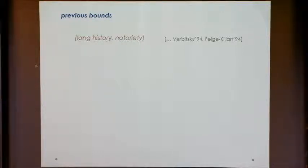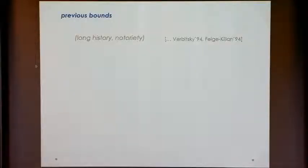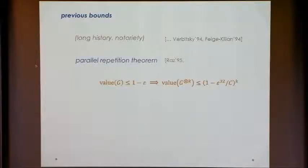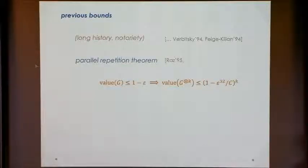Initially it was conjectured that parallel repetition behaves exactly like sequential repetition, but this turned out to be false — there are games where the value of playing twice is exactly the same as playing once. Nevertheless, it was proven that if you take k to infinity, the value goes down to zero. Feige and Kilian proved an explicit polynomial lower bound, and then Ran Raz proved the famous parallel repetition theorem: for every game where the value is bounded away from 1, the value of the repeated game goes down exponentially with the number of repetitions.